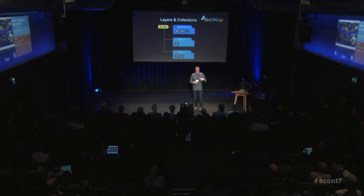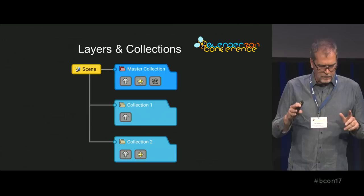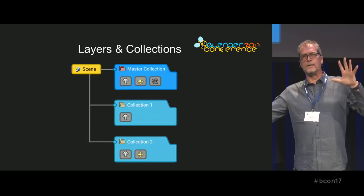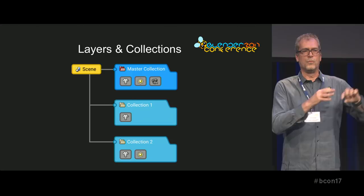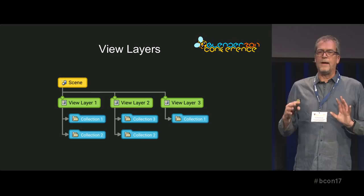Once you have collections, you put them to use in the layers. The scene has a master collection, then collection 1 and collection 2. Every collection refers to objects which are in the database. This slide shows how the master collection and the other collections are stored in the scene.